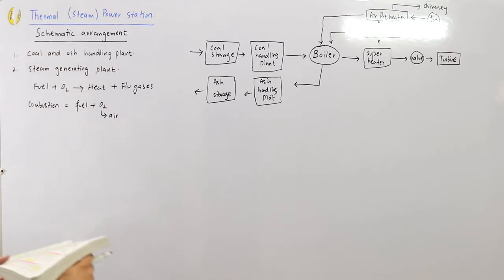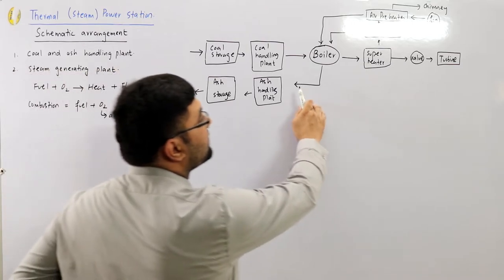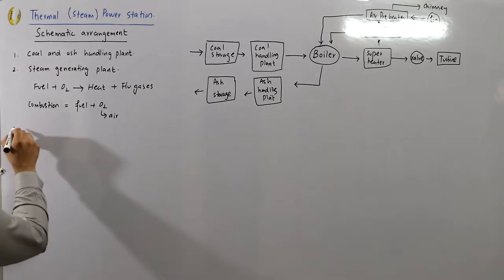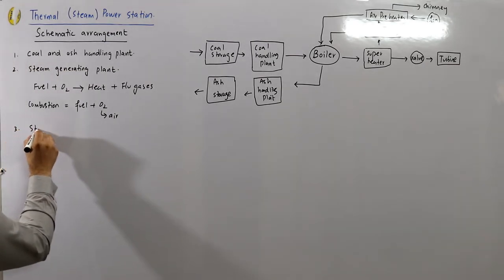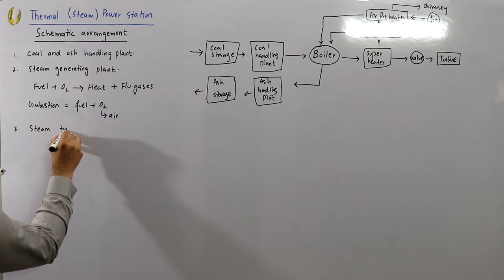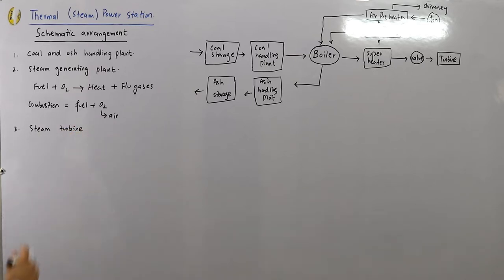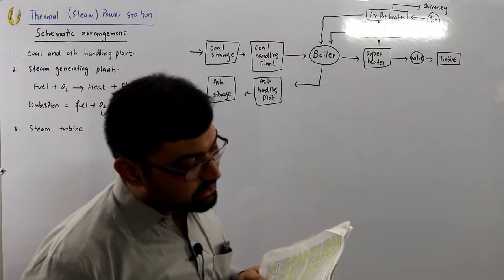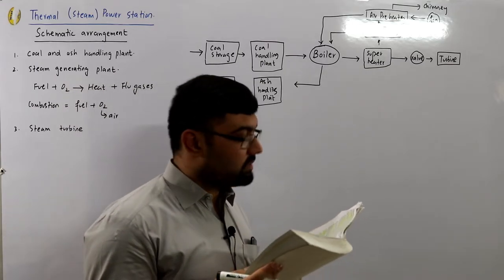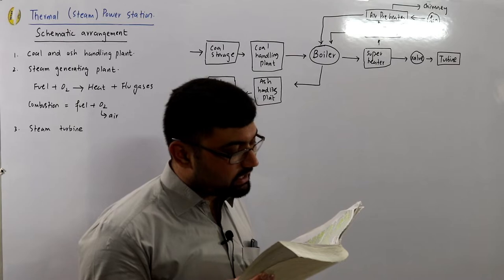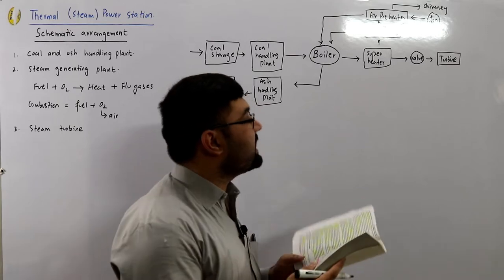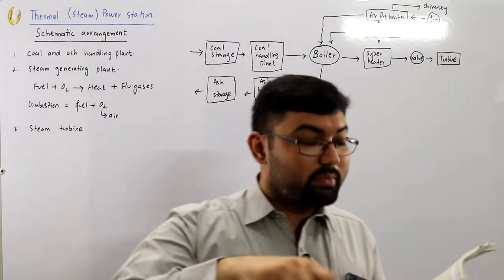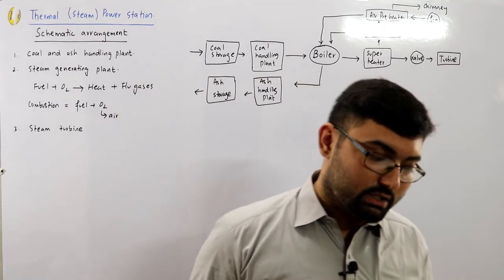Number three is the steam turbine. The dry superheated steam from the superheater is fed to the turbine through the main valve. The heat energy of the steam, as it passes over the blades of the turbine, is converted into mechanical energy.